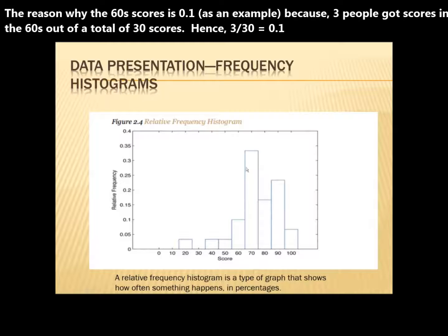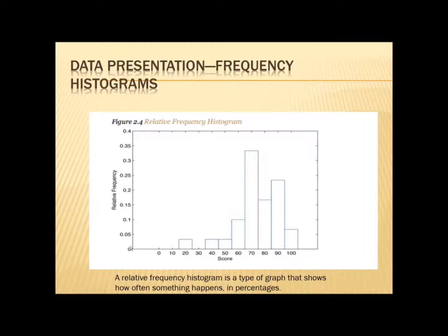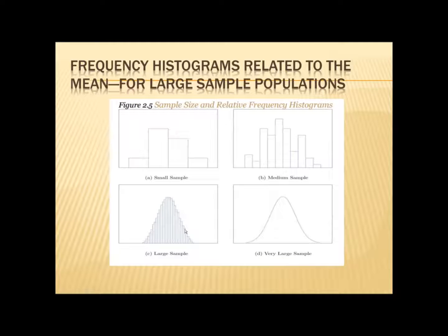The characteristics and shape are still the same, but the numbers on the y-axis change because this is about a percentage. Now you begin to see how you go from a histogram to what is called a Gaussian curve or a bell curve.